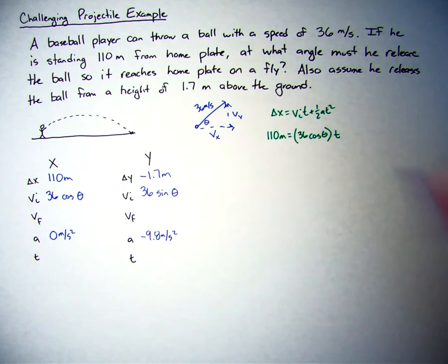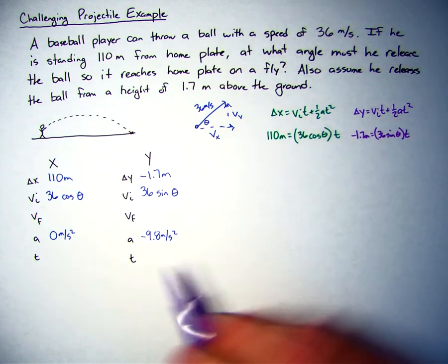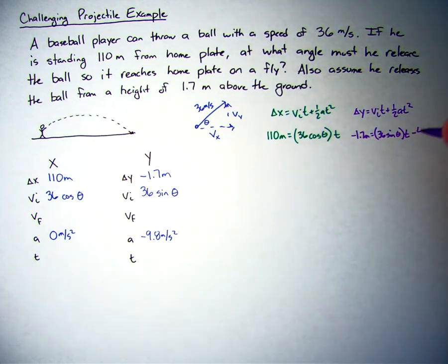In the y direction, I'm going to do the same thing, just use the displacement equation, v i t plus 1 half a t squared. And I know that it's negative 1.7 meters equals 36 sine of theta times t, 1 half times negative 9.8, so that's minus 4.9 t squared.